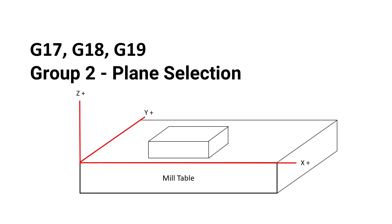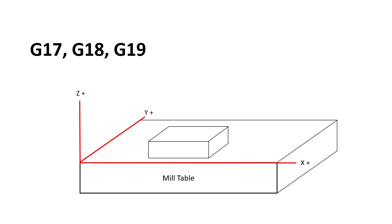Group 2 is the plane selection group. Only one of these codes can be active at a given time. G17, G18, and G19 are the plane designations that are part of this group.